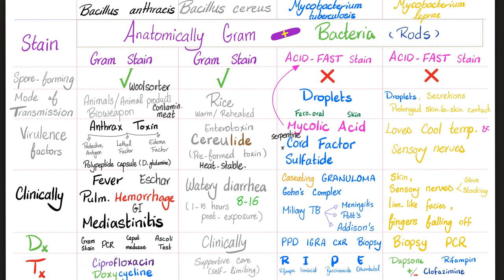Treatment: anthrax — ciprofloxacin or doxycycline, especially prophylactically after suspected exposure. Bacillus cereus — self-limiting; supportive care and watchful waiting. TB — RIPE regimen: rifampin, isoniazid, pyrazinamide, ethambutol. Leprosy — rifampin and dapsone for tuberculoid form; add clofazimine for lepromatous (immunocompromised) form.